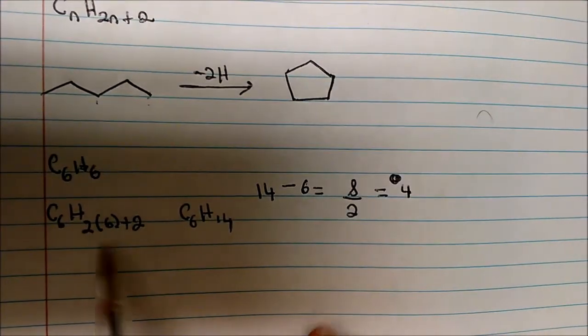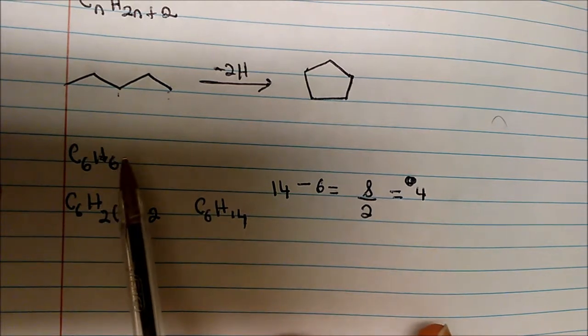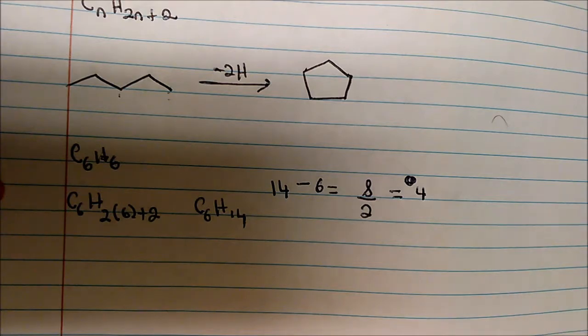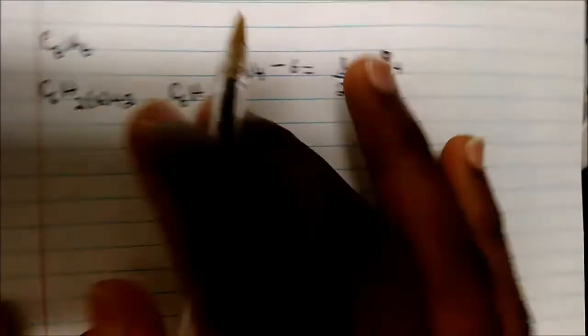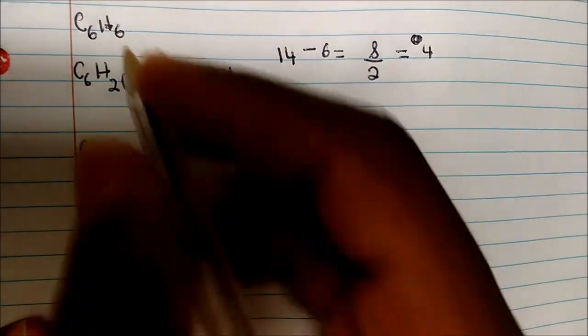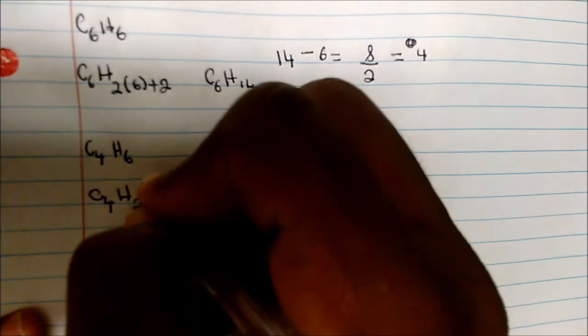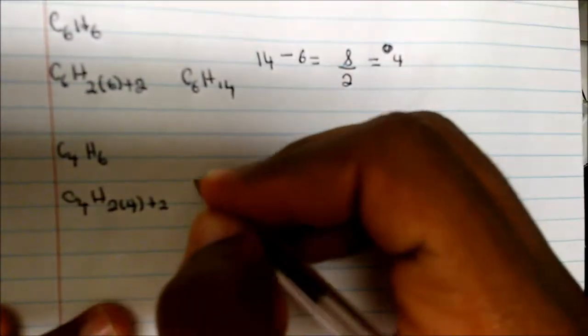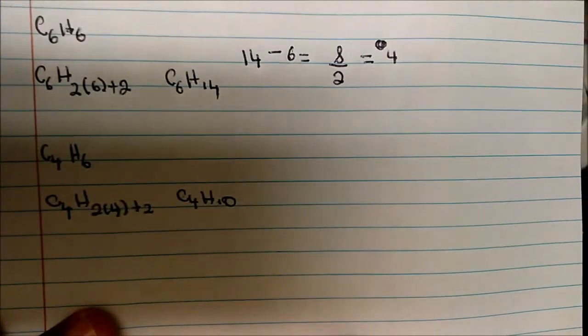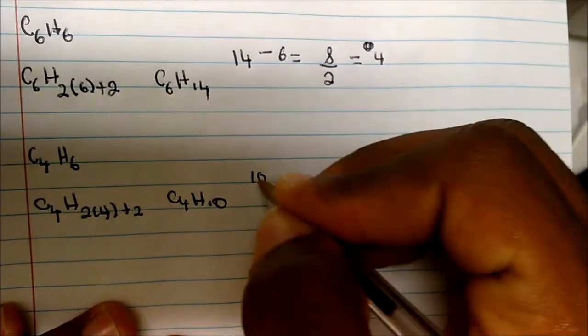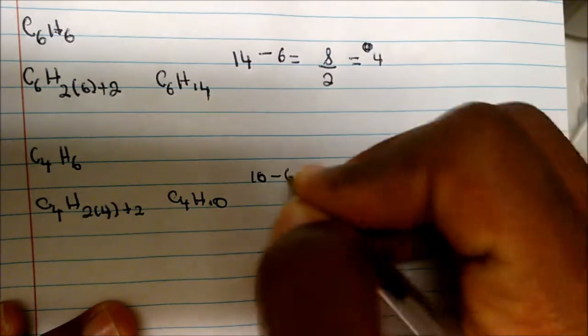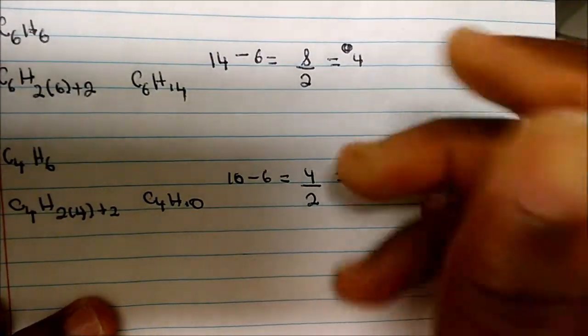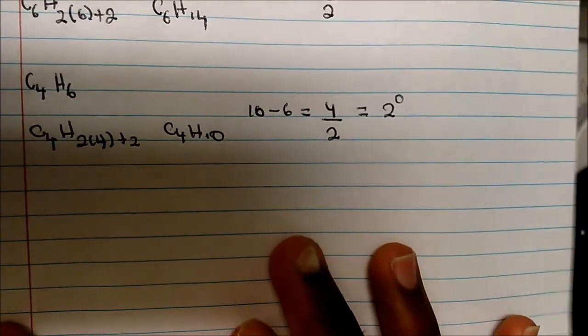Dividing 8 by 2 gives 4 degrees of unsaturation. The general procedure is: derive the saturated hydrogen count using CnH2n+2, subtract the actual hydrogen count, then divide by 2. Applying this to C4H6: the saturated formula is C4H10. Subtracting: 10 minus 6 equals 4, divided by 2 gives 2 degrees of unsaturation.